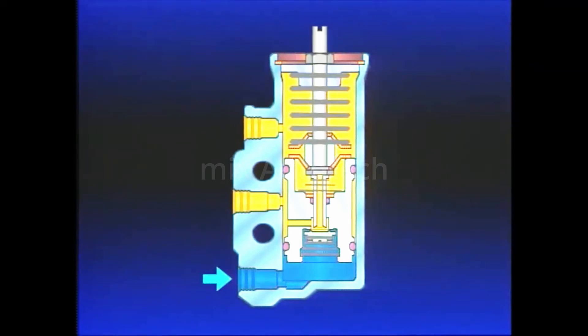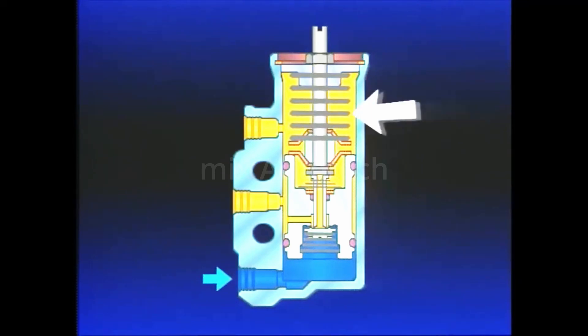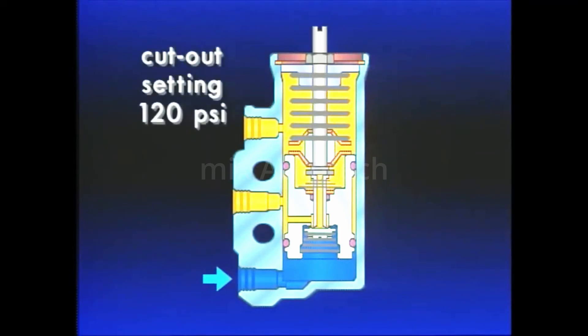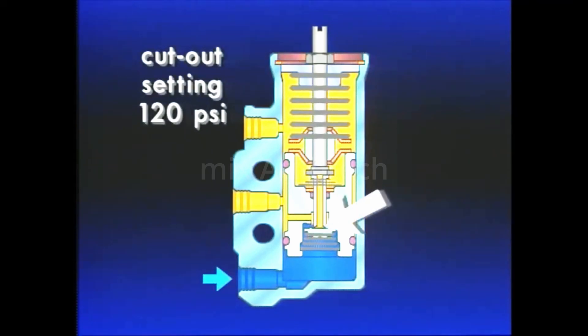As air from the compressor builds reservoir pressure, the governor's piston and valve move together against the resistance of the pressure setting spring. When reservoir pressure reaches the cutout setting of the governor, typically 120 psi, the piston will have moved sufficiently to seal the exhaust and open the inlet.